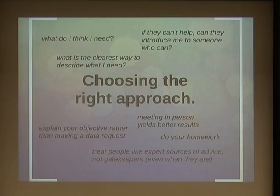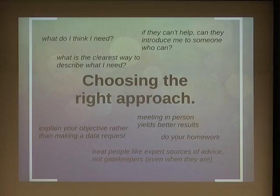Every time I've asked someone for data and just said 'I want this data set,' it inevitably comes back with the wrong thing. But people tend to be experts in their field, so if you go 'I'm trying to do this and we think this might work,' they come back with 'oh that doesn't exist but there's this much better way and no one's told you about it.' People are usually pretty willing, and if you're not talking to the right person, to actually introduce you — people like to connect people. So if they can't help, ask them who can.